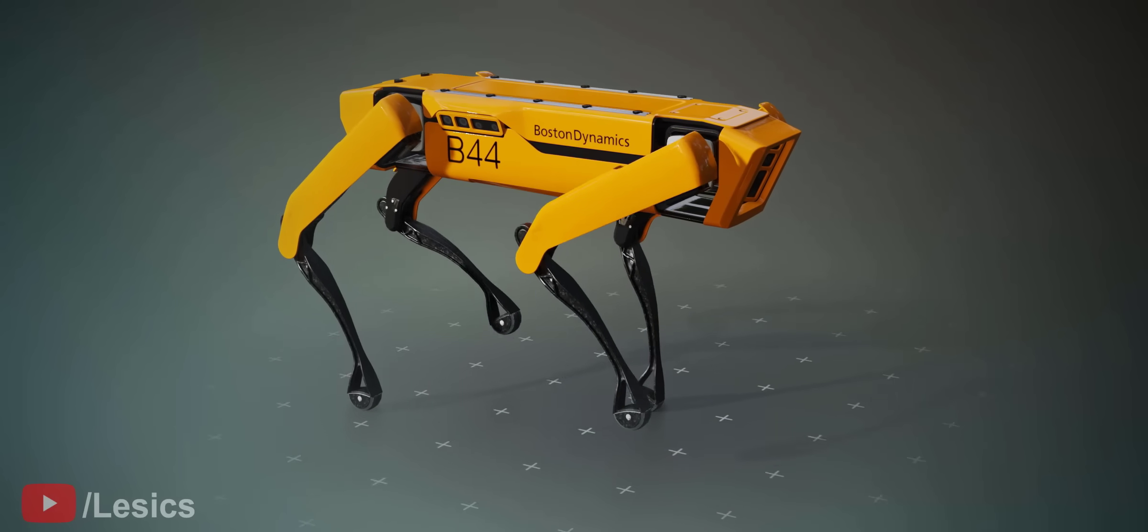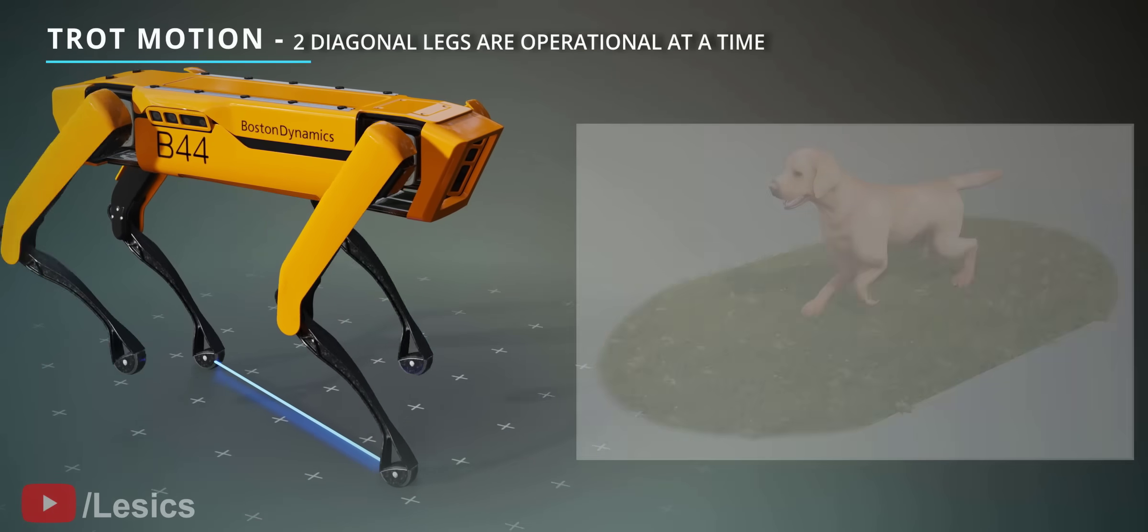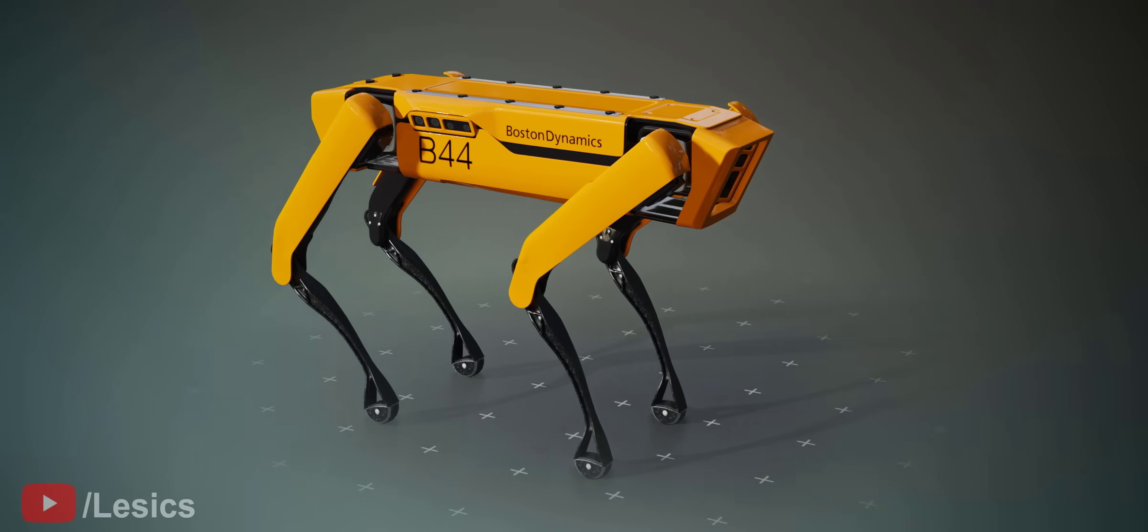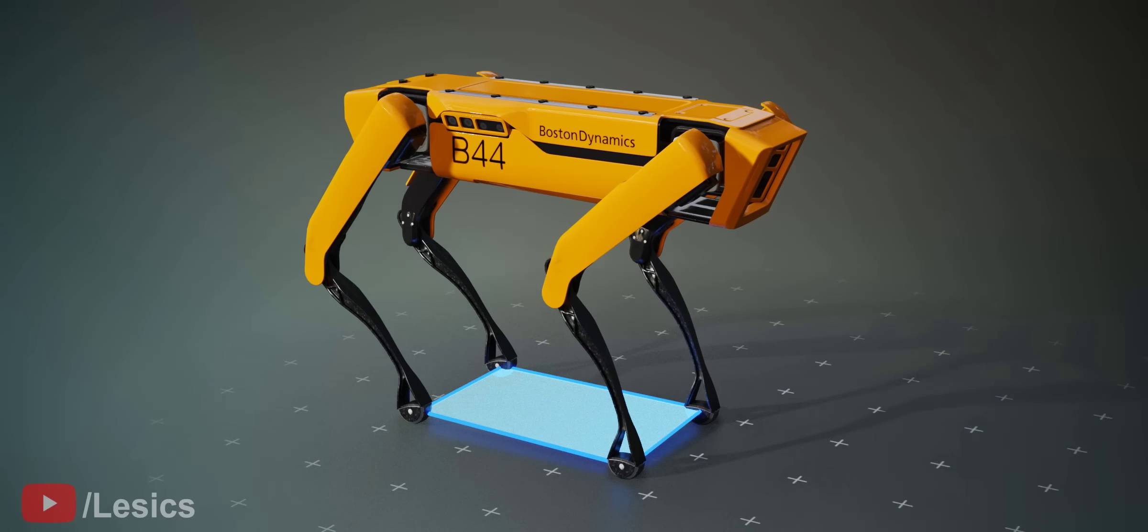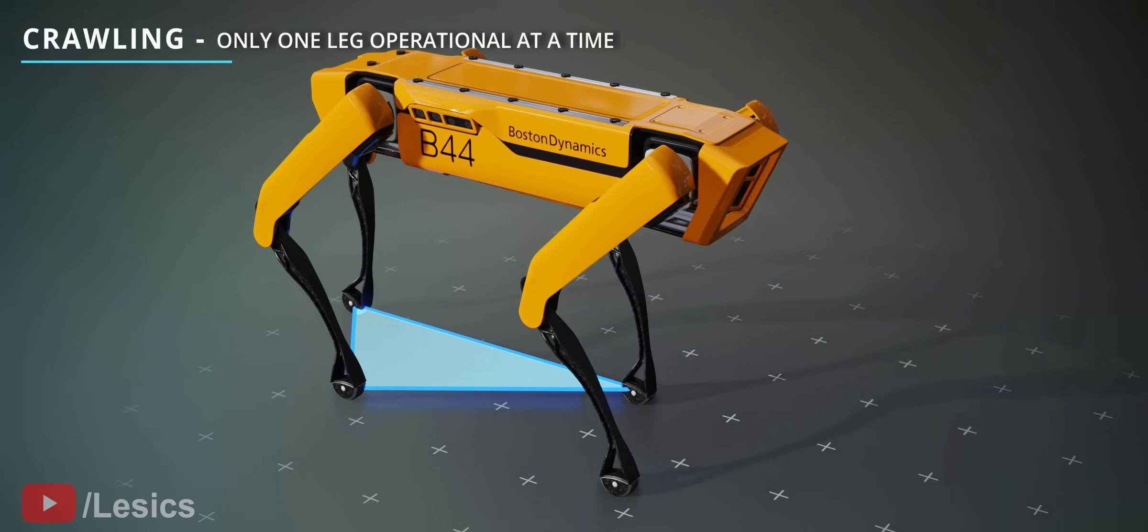The walking pattern we've seen so far is called trot motion. Our beloved furry friends, dogs and cats, walk this way. Our spot robot can do one more interesting walking pattern, crawling. Obviously, the robot will select this kind of pattern when stability is of utmost importance.